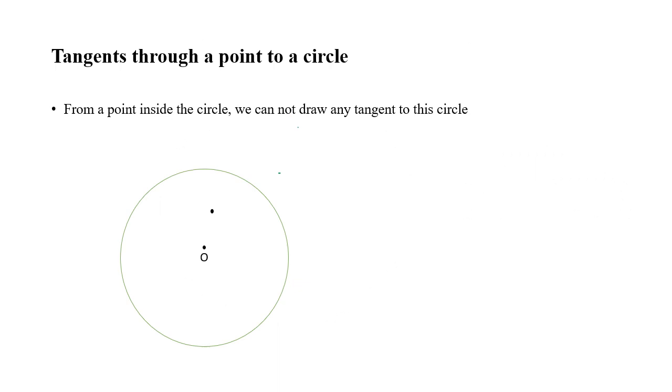Now tangents through a point to a circle. If I have this circle center O and a point inside the circle, if I want to draw a line passing through this point inside the circle, can this line be a tangent? This line, the blue line, cuts the circle in two points, so it's a secant, not a tangent. In any case I try drawing a line, it will be a secant, it cannot be a tangent.